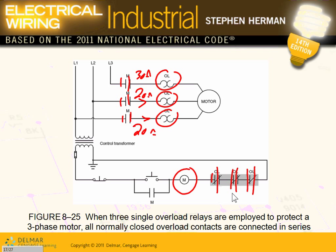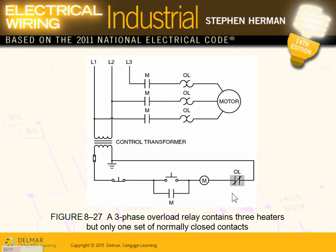You would never be able to understand control if you don't understand that little schematic. This is a three-phase setup — any one of these heaters can heat up and open the same contact. They're all in each phase; any one of them senses a higher flow of current, it pops the contact open. And in a case like this, it will de-energize the magnetic contactor.